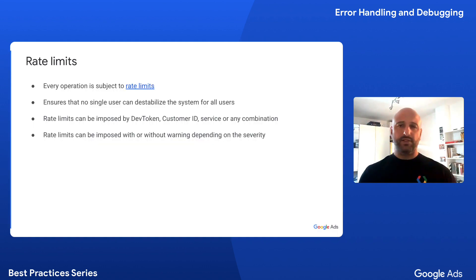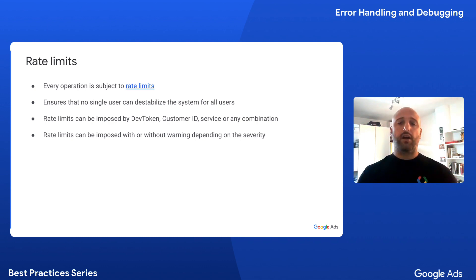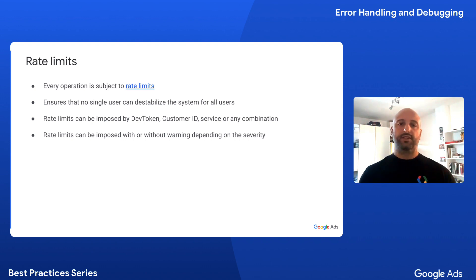All Google Ads API operations are subject to rate limits, meaning that there is a limit on the number of operations per second that you can perform. This is to make sure that our services have the same level of availability for all users. Rate limits can be imposed on several different dimensions, such as the operations performed by a dev token on a customer ID or on a specific service in a set amount of time. They can also be a combination of these.